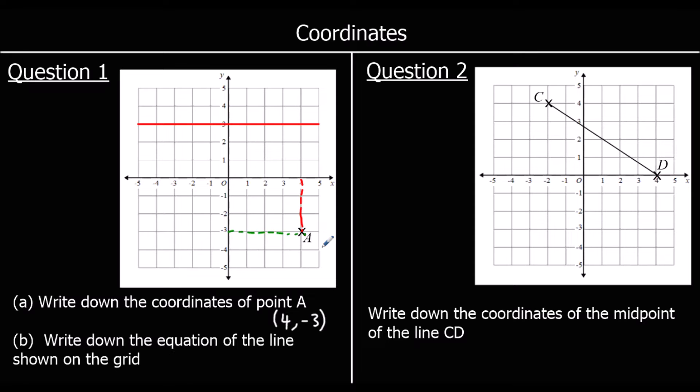Part B, write down the equation of the line shown on the grid. So there's a red line here. If we look at the coordinates of the points on this line, it's 0, 3, 1, 3, 2, 3, 3, 3, 4, 3, 5, 3, and so on. All of the points on this line have got a y-coordinate of 3. So we call the line y equals 3.